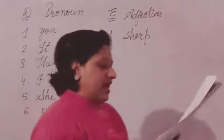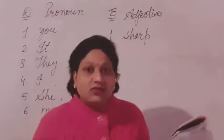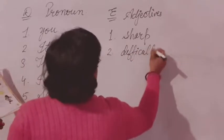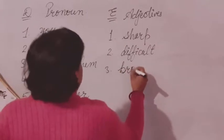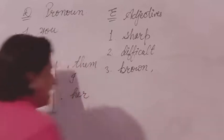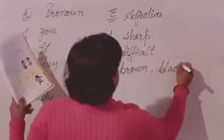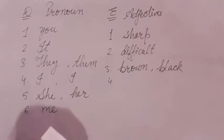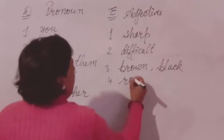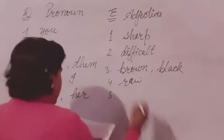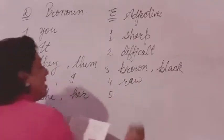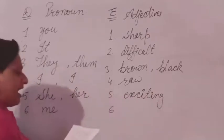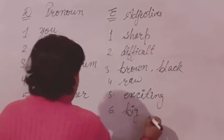Second: 'This is a blank question. We are not able to solve it.' This is a difficult question, so we use the word 'difficult.' Third: 'The girl has blank eyes and blank hair.' The answers are 'brown' eyes and 'black' hair. Number four: 'He is carrying a basket full of blank mangoes.' The answer is 'raw' mangoes. Next: 'I saw a blank film with my brother last evening.' The answer is 'exciting.' Elephants have 'big' ears.